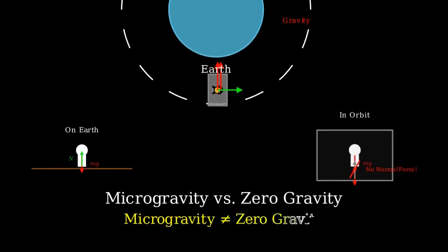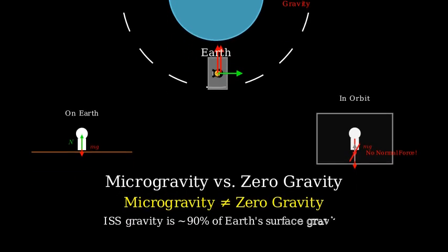What astronauts experience is called microgravity, not zero gravity. They float not because gravity is absent, but because they are in continuous free fall around Earth.